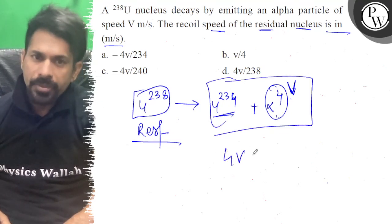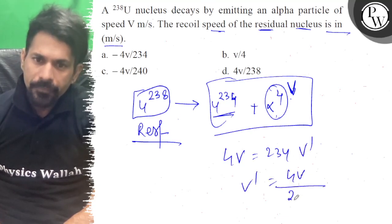This becomes 4 into v should be equal to 234 into v dash. So v dash is equal to 4v upon 234.